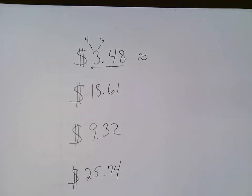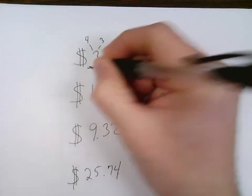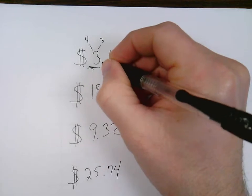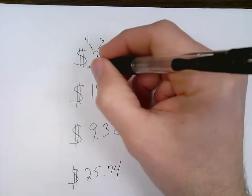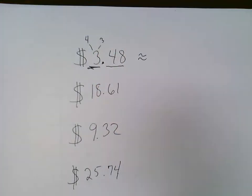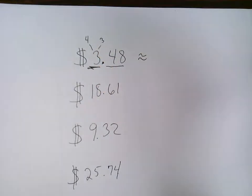So just like when we rounded before, there was one part we underlined. I'm going to underline everything to the left of the decimal point. I'm going to underline the dollars. And just like before, the underlined part is either going to stay the same or it's going to go up. So in this case, our three can either stay a three or it can go up to a four. So basically my two answer choices are going to be $3 or $4.